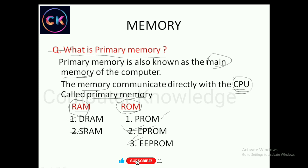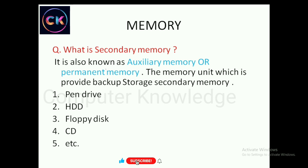Next is secondary memory. It is also known as auxiliary memory. Secondary memory is permanent memory — data is permanently stored. It provides backup storage and gives information to the system.